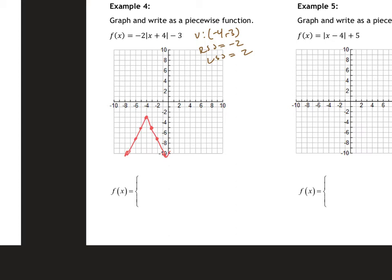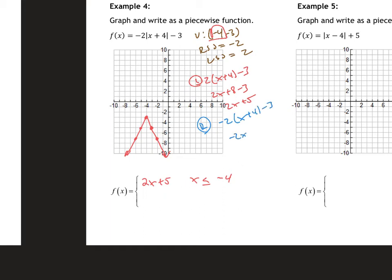For the left side, we flip the sign and simplify: 2x plus 8 minus 3 gives us 2x plus 5, where x is less than or equal to negative 4. For the right side, we keep everything: negative 2x plus 4 minus 3 becomes negative 2x minus 8 minus 3, so negative 2x minus 11, where x is greater than negative 4 — the x-value of our vertex.